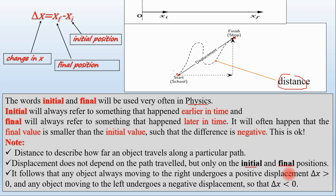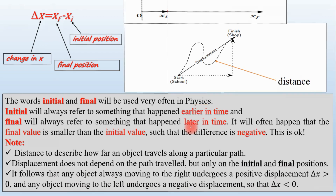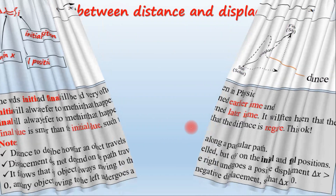An object moving to the right has a positive displacement where delta x is greater than zero. An object moving to the left has a negative displacement where delta x is less than zero. There is also a difference between distance and displacement.